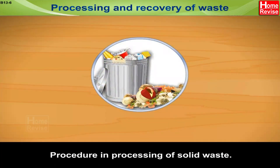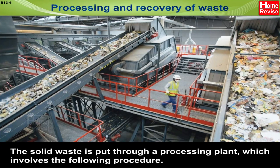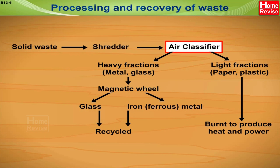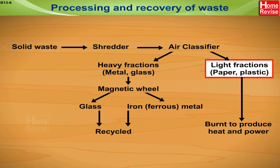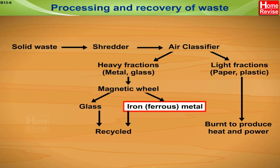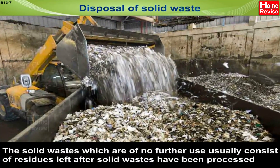Here is the procedure for processing solid waste. The solid waste is put through a processing plant involving the following steps: solid waste is first put in a shredder, then processed in an air classifier, which classifies it into heavy fractions and light fractions. Heavy fractions include metal and glass; light fractions include paper and plastic. Further, heavy fractions are processed through a magnetic wheel, where glass and iron (ferrous metal) get separated and recycled, while light fractions — paper and plastic — are burnt to produce heat and power.